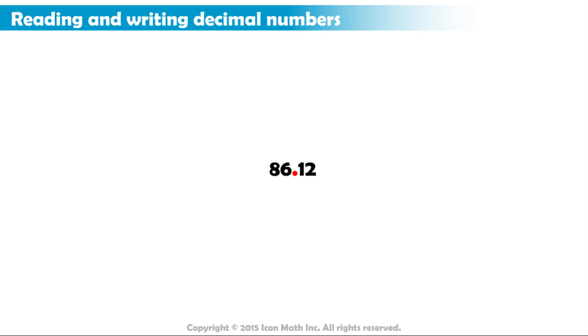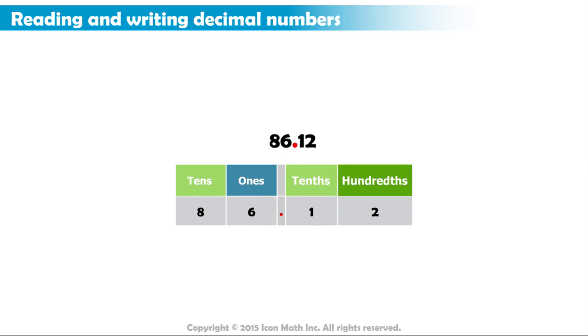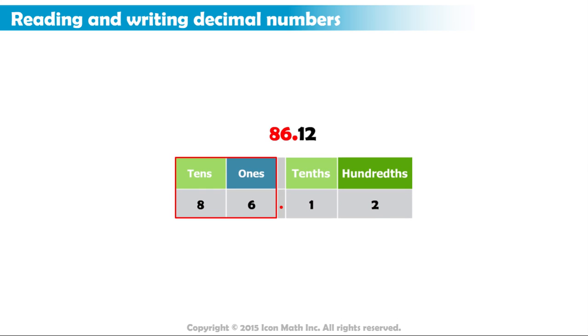Try reading the next decimal number. Here is how it looks on a place value chart. The whole number part is easy. It is just 86. The decimal point comes to the right of the ones place. So we write AND to indicate that we have a decimal part.